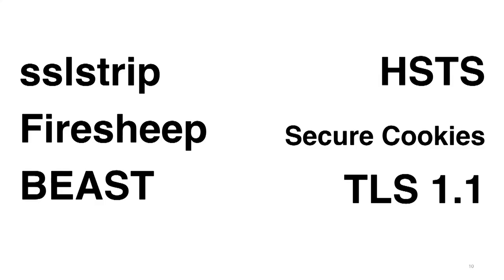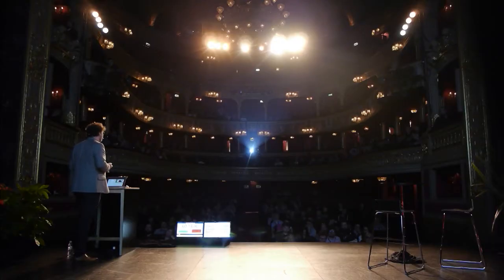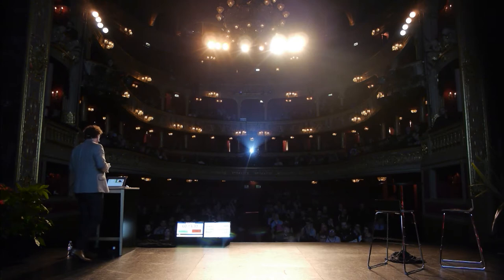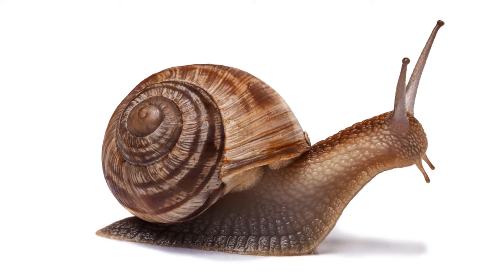These were not the only flaws pointed out in web encryption, but they did lead to some great innovations. HSTS tells the browser to always use HTTPS for a site. Secure cookies meant that authentication cookies would never be sent in plain text. Beast, for example, was mitigated by TLS 1.1. However, TLS 1.1 was five years old by the time Beast was announced and wasn't widely supported. There was stagnation in the encryption market.